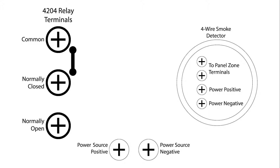Before we finish this video, I want to cover using a relay for smoke reset. This is a common use for relays when you need to drop power to a 4-wire smoke detector so that it can reset after an alarm. Let's take a look at the wiring for a smoke reset.